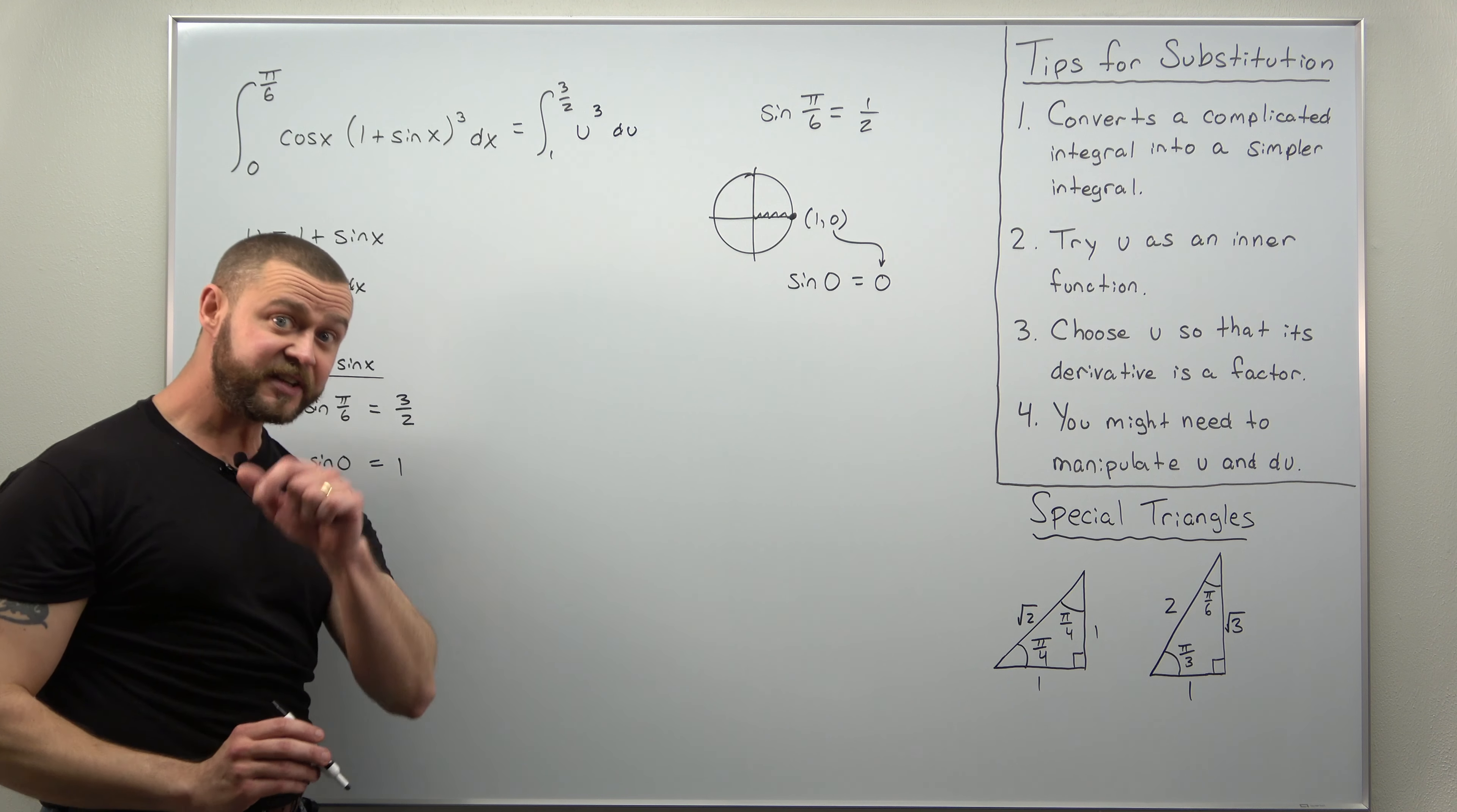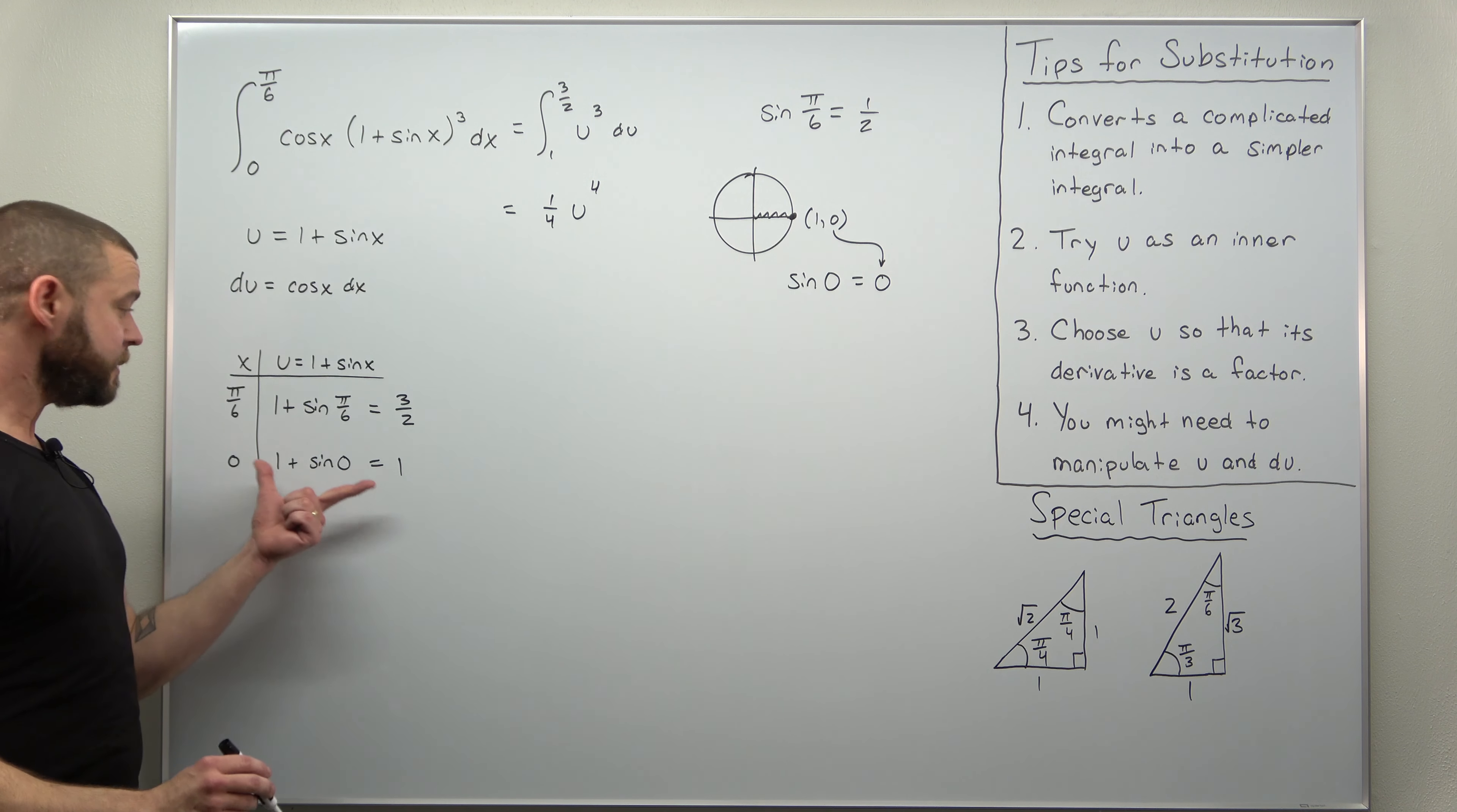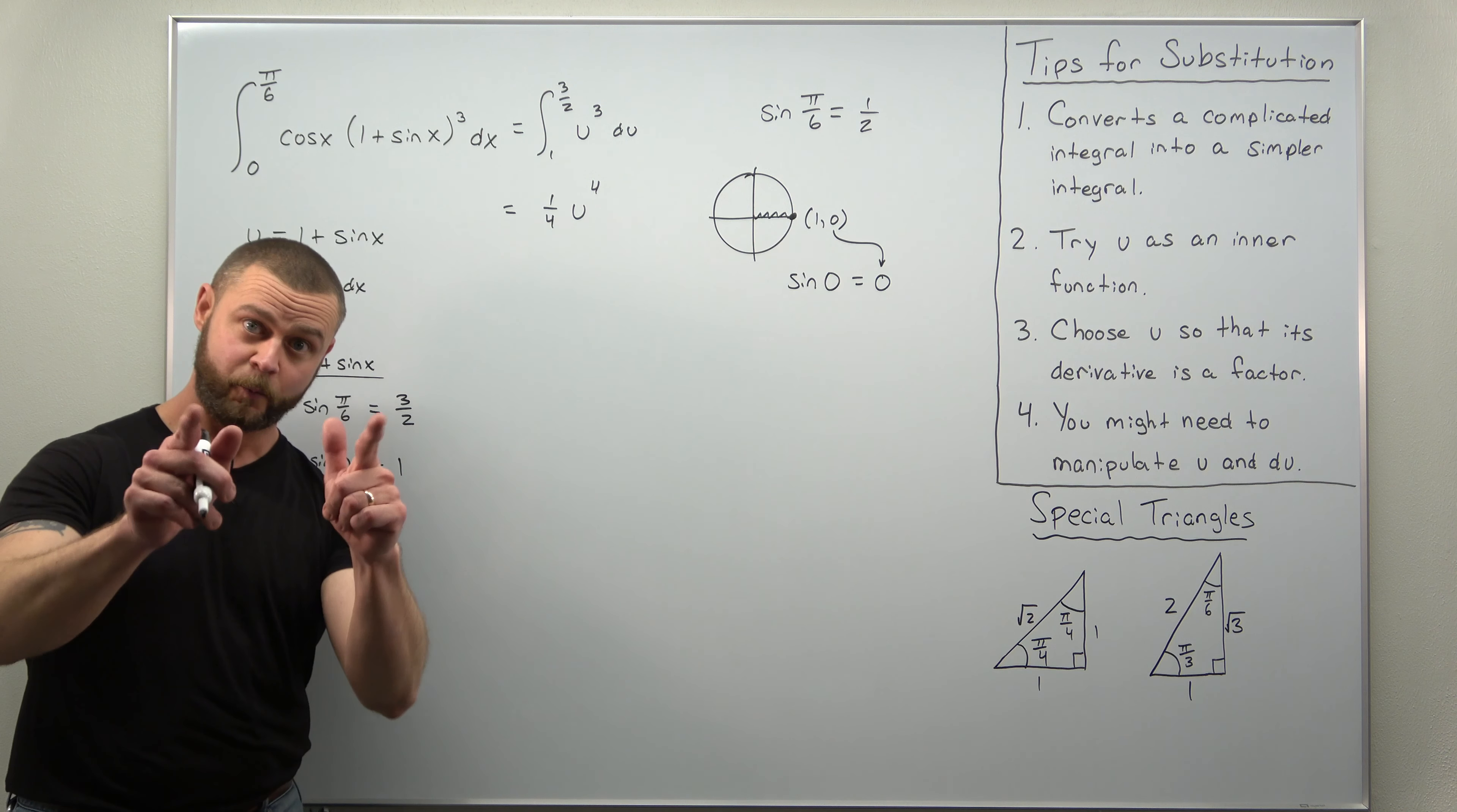And that's a really basic anti-derivative - we just apply the power rule to that. We're going to get a factor of one over four times u to the fourth power. And since we converted our limits, we do not have to back substitute u in terms of x. Once you convert your limits, you can completely forget about your substitution, which is why I always advocate to convert your limits.